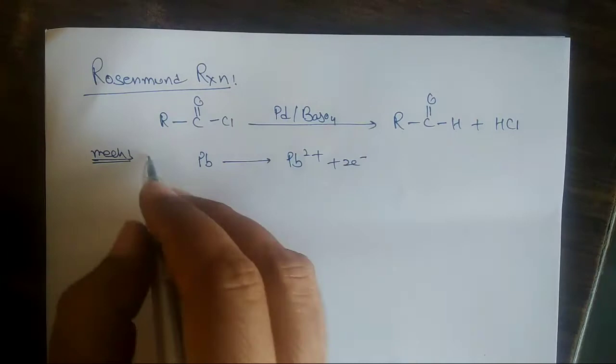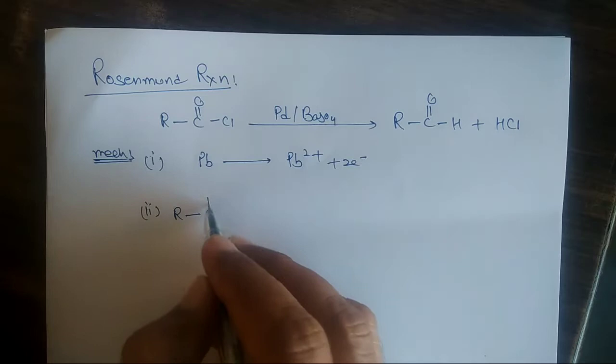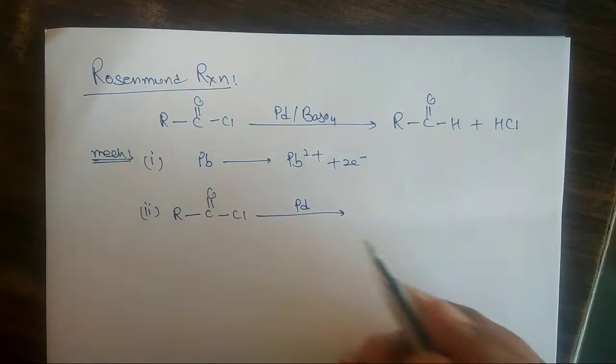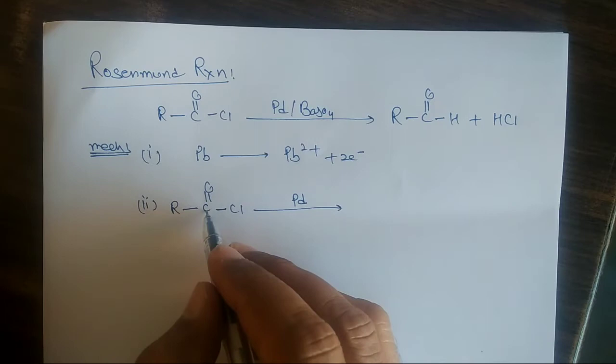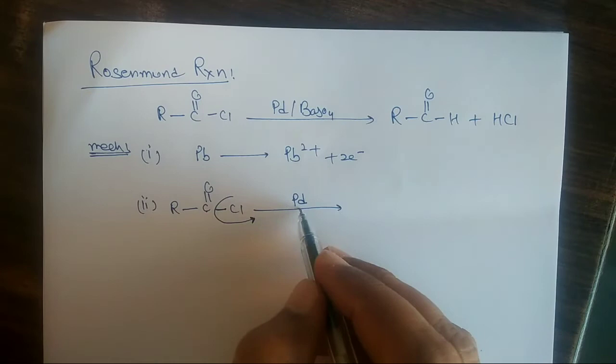In the next step, we have RC double bond O and Cl — this is the acid chloride. We have got Platinum. The carbon-carbon bond will break here, and Platinum will donate its two electrons.